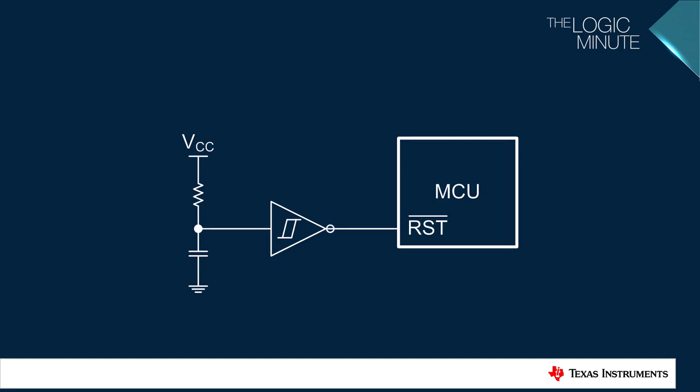By switching the buffer to an inverter, the startup pulse will be high instead of low, which can be useful if a component requires an active high reset.